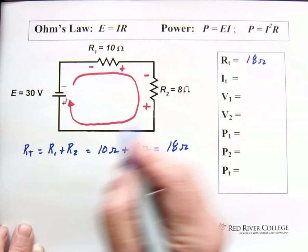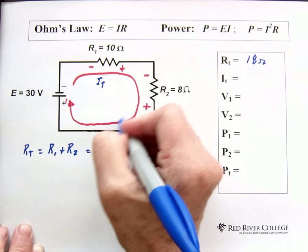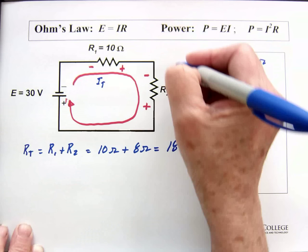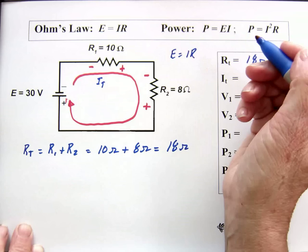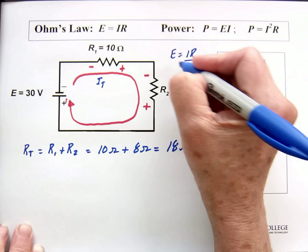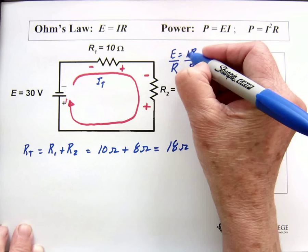Now we can find total current. So, we can find IT which is the current going through this entire circuit. And we're going to use E equals IR. So, let's just solve it up here. E equals IR. We're solving for current, so we're going to divide by R on this side because we want current by itself. Divide by R here. These two R's cancel.